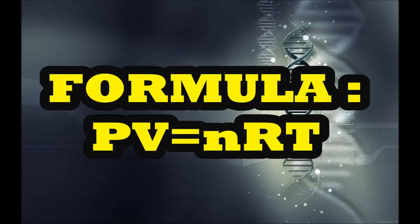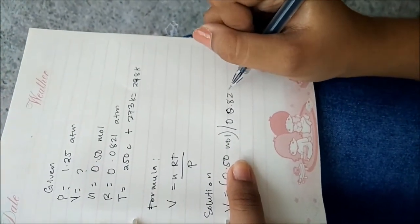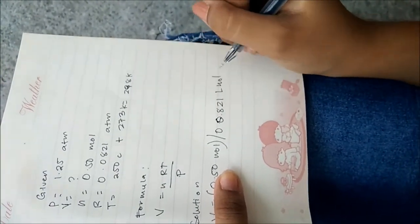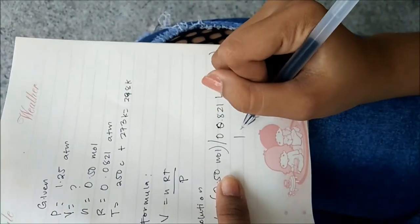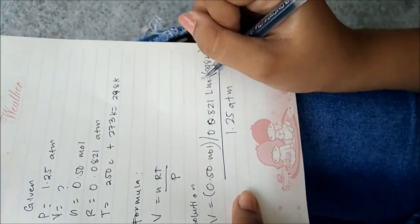The formula for ideal gas law is PV equals nRT, where P is pressure in atmosphere, V is volume in liter, N is the number of moles, T is temperature in Kelvin, and R is the universal gas constant. So our solution will be: V is equal to 0.50 mol times 0.0821 liter·atm/mol·Kelvin times 298 Kelvin, divided by 1.25 atm. Cancel all the same units, which are atm, mol, and Kelvin.